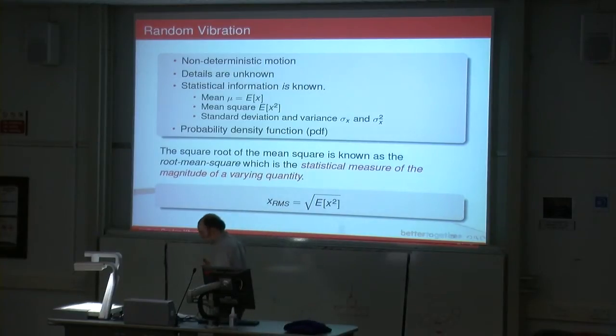There's some statistics that we worked out. We know the mean, which is the expected value of x. We can calculate the mean square, which is the expected value of x squared. And then we can work out the standard deviation or the variance, which is sigma x or sigma squared x. They're all related to each other. The variance is the mean square minus the mean value of x squared.